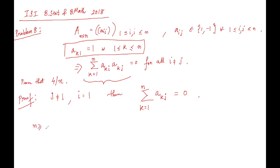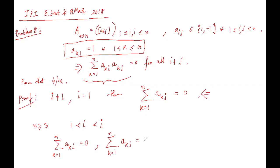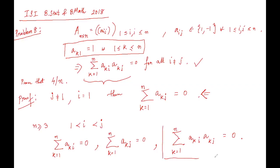Now since n is greater than or equal to three, we can choose i and j such that i is strictly greater than one and j is strictly greater than i. Then we have three conditions: the sum of a_{ki} from k=1 to n equals zero, the sum of a_{kj} from k=1 to n equals zero, and from the given orthogonality condition the sum of a_{ki}·a_{kj} from k=1 to n equals zero. We will now analyze these conditions.